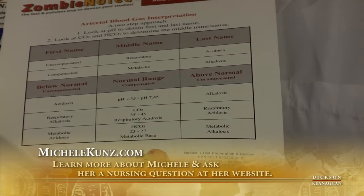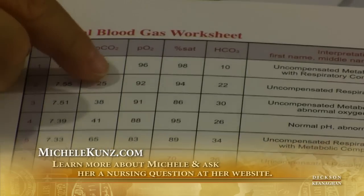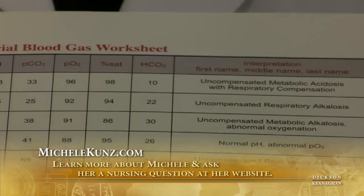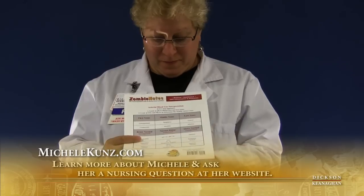The bicarb is normal, so the kidneys haven't tried to compensate yet. The kidneys take quite some time to compensate, while the lungs do it quickly. So this is a problem that hasn't been fixed. Looking further at this patient's numbers, the PO2 and SAT are also low, so that's another thing we have to treat. But that's how we play the arterial blood gas game — look at the pH first to give it its first and last name, then find out who's causing it and who's compensating.